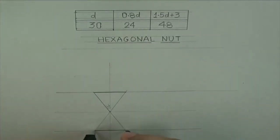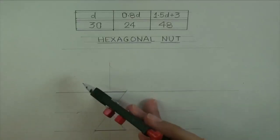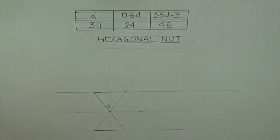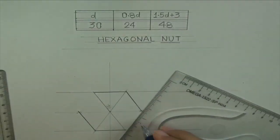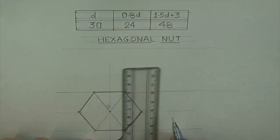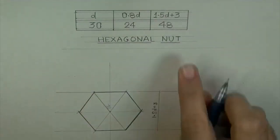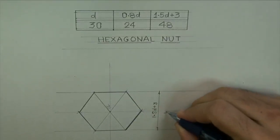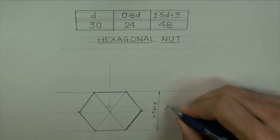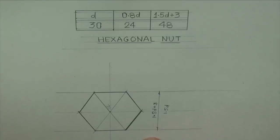See this. First we will get the side, then take this side, you cut on both the sides. We have taken 30-30 with vertical, so that's how we got this. After drawing hexagon, this is 1.5D plus 3. We can take 1.5D also, but I am taking 1.5D plus 3.